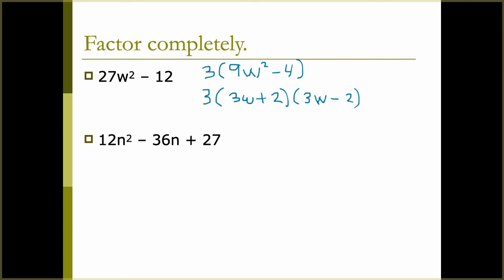Next, factor completely: 12n² - 36n + 27. We look for a GCF — this one has a GCF of 3, leaving us with 3(4n² - 12n + 9). The first term 4n² is a perfect square, and the last term 9 is a perfect square — so we have a perfect square trinomial. The square root of 4n² is 2n, and the square root of 9 is 3. Using the sign of the middle, we get 3(2n - 3)². To verify: 2n × (-3) = -6n, doubled gives -12n, which matches.